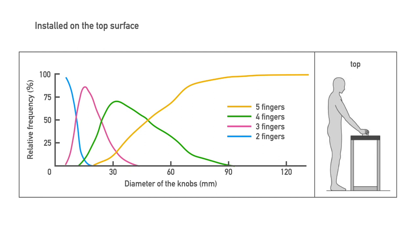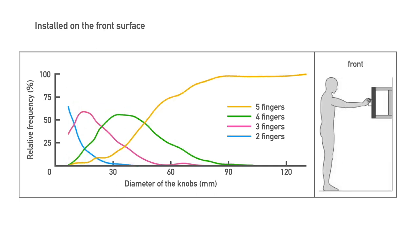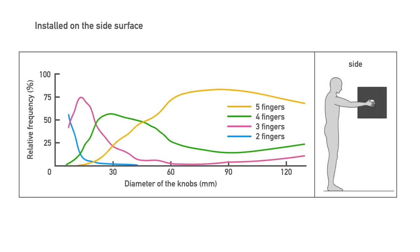This figure shows the transitions between the number of fingers in the top setting. Statistically, each graph's intersection can be considered the diameter where the number of fingers changes. This is the front setting. This is the side setting. You can see that the proportion of 5 finger users is decreasing from around 90 mm. It seems that there is a relationship between the movement of the wrist during the rotation operation and the fingers.